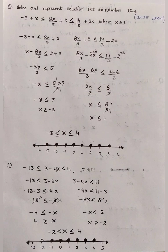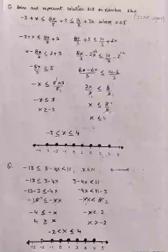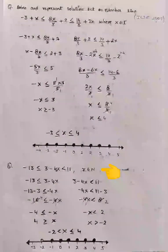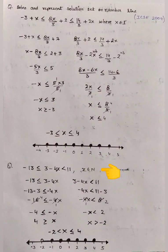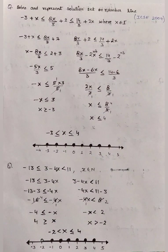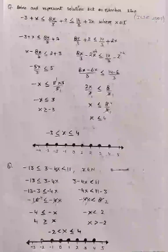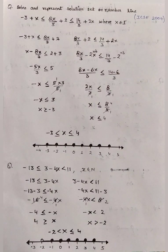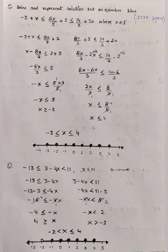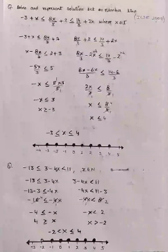Let's see the next inequation: 3 − 4x ≥ −13 and < 11, where x belongs to N, that is natural numbers. To solve this, we again split the question into two inequations.